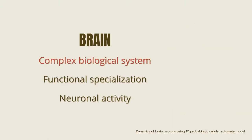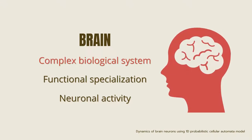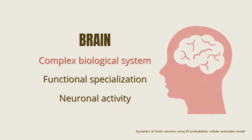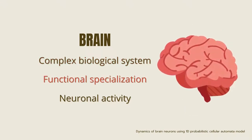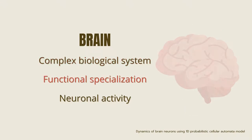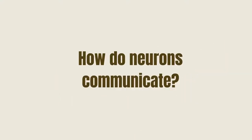Our brain is one interesting biological system since it has been known to exhibit complexity on different functional regions that operate from the system of the neuron's activity. How do we determine this neuron's activity?